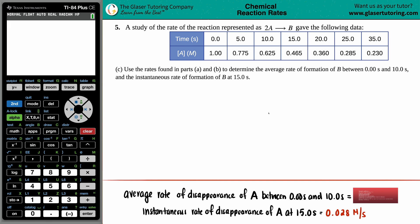Number five: a study of the rate of the reaction represented as 2A yields B gave the following data. Now letter c says use the rates found in part a and b to determine the average rate of formation of B between 0 and 10 seconds and the instantaneous rate of formation of B at 15 seconds.